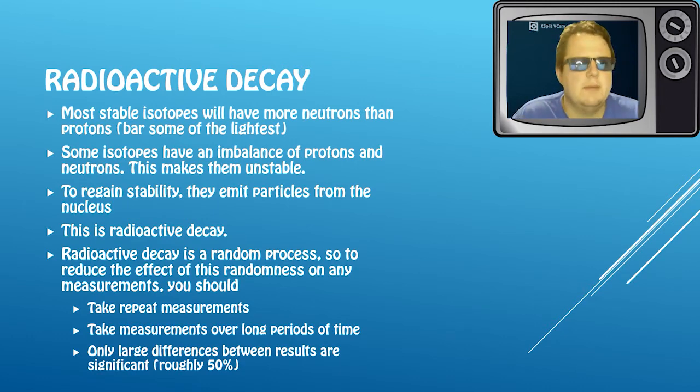So you might have too many protons, we might have too many neutrons. To regain stability, they emit particles from their nucleus, and this is what radioactive decay is.